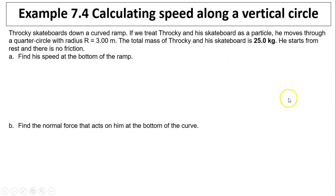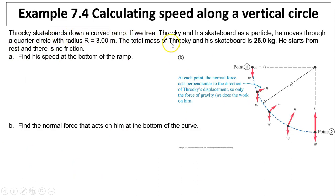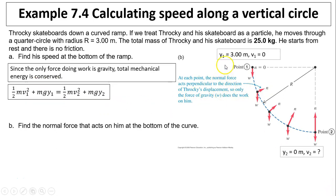Another example: calculate speed along a curved path. Throcky skateboards down a curved ramp — treated as a particle, he moves through a quarter circle with radius R equals 3 meters. Total mass is 25 kilograms. He starts from rest and there is no friction; find his speed at the bottom of the ramp. The only force doing work is gravity; normal force does no work. Using conservation of energy: Y1 equals 3, V1 equals 0, Y2 equals 0. Plugging in, V2 equals the square root of 2gR, which equals 7.67 meters per second.